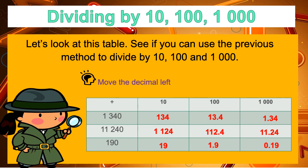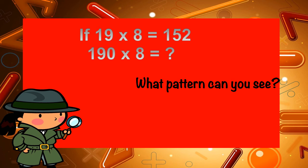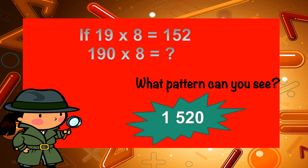Hope you got everything correct! But let's look at this: if 19 times 8 is equal to 152, then what is 190 times 8? What pattern can you see? Yes, the answer is 1,520. 19 times 8 is 152, and there is one zero in 190, so we add one zero to our answer. That gives us a new answer of 1,520.